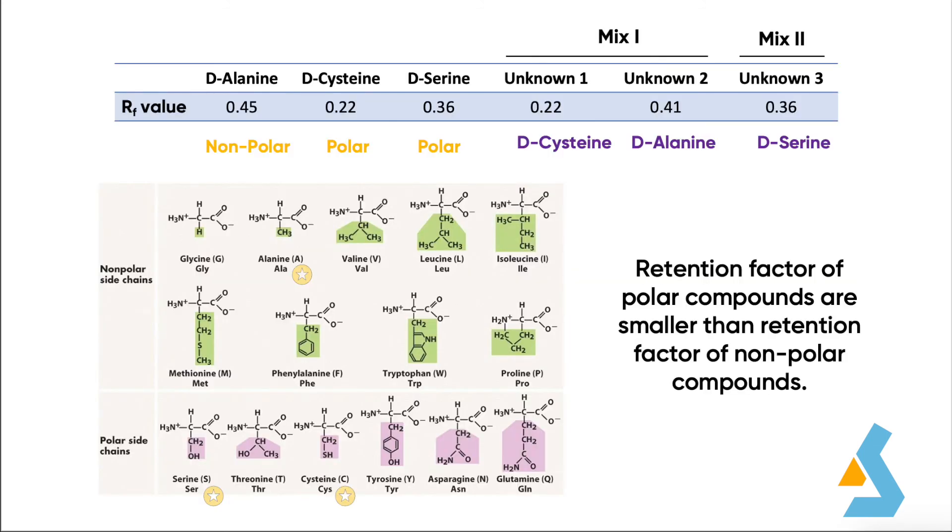Retention factor of polar compounds are smaller than retention factor of non-polar compounds. We can corroborate this by looking at this amino acid table on the left and comparing the retention factors of D-alanine with D-cysteine and D-serine. D-alanine has a non-polar side chain. Thus, it is non-polar. Compared with D-cysteine and D-serine, it has a higher RF value.